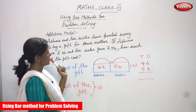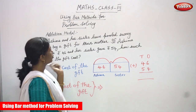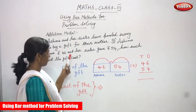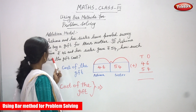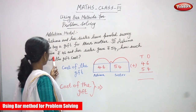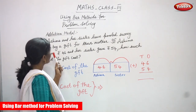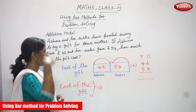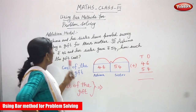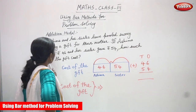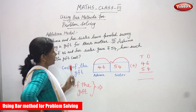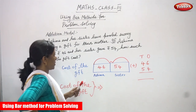Azima and her sister have pooled money to buy a gift for their mother. If Azima gave rupees 46 and her sister gave rupees 54, how much did the gift cost? This is the question.